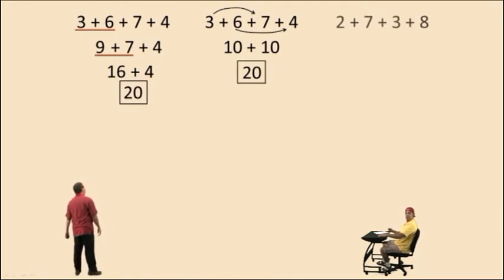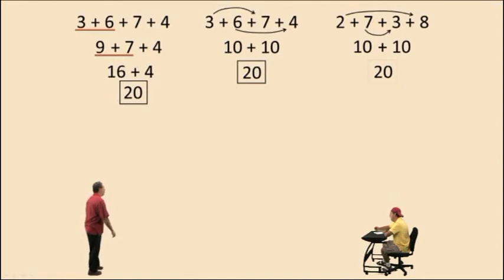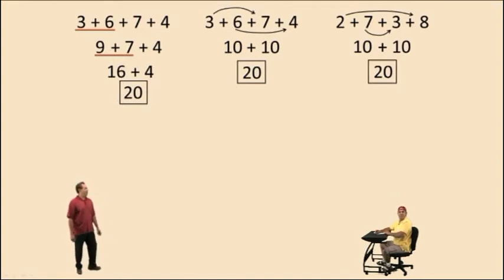Alright, Charlie. Let's do another one. What's 2 plus 8? 10. Very nice. What's 7 plus 3? 10. And 10 plus 10? 20. 20. Very nice there, Charlie.